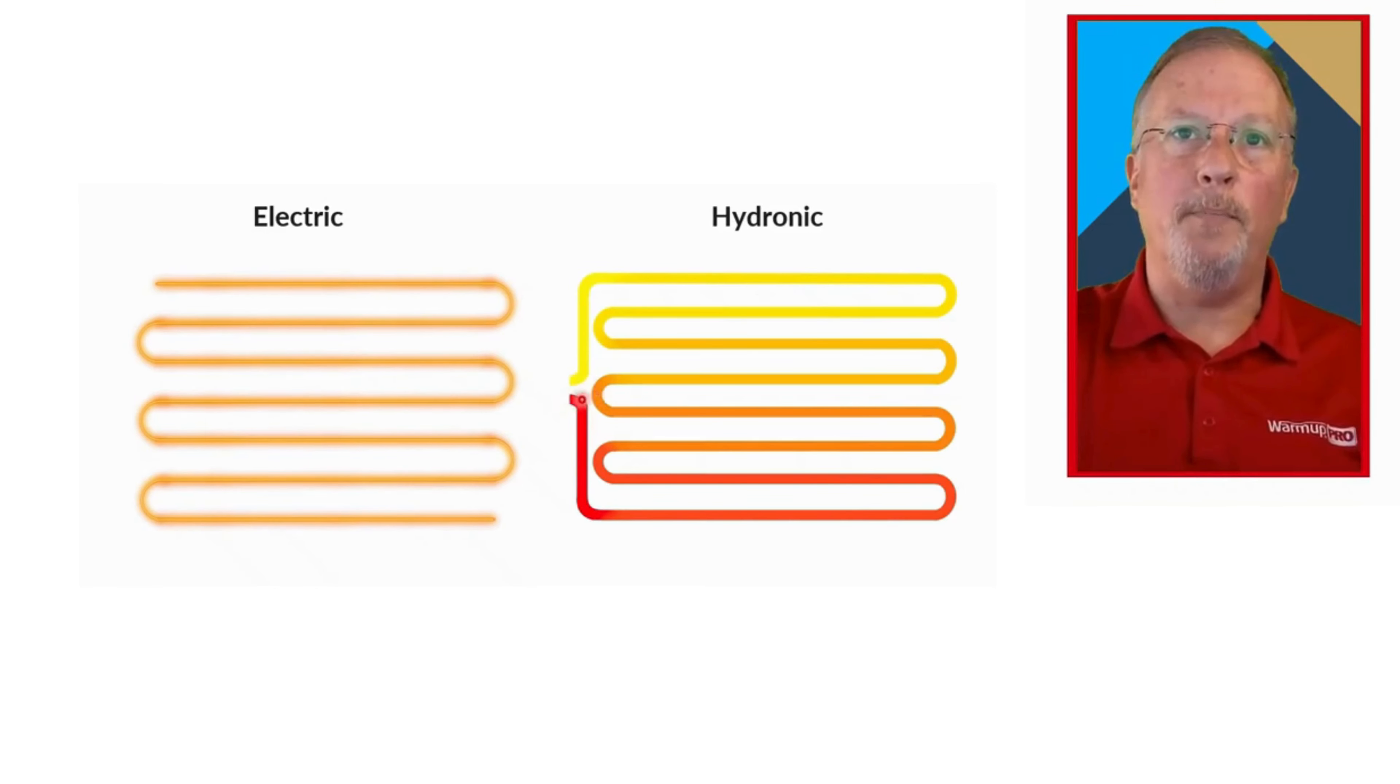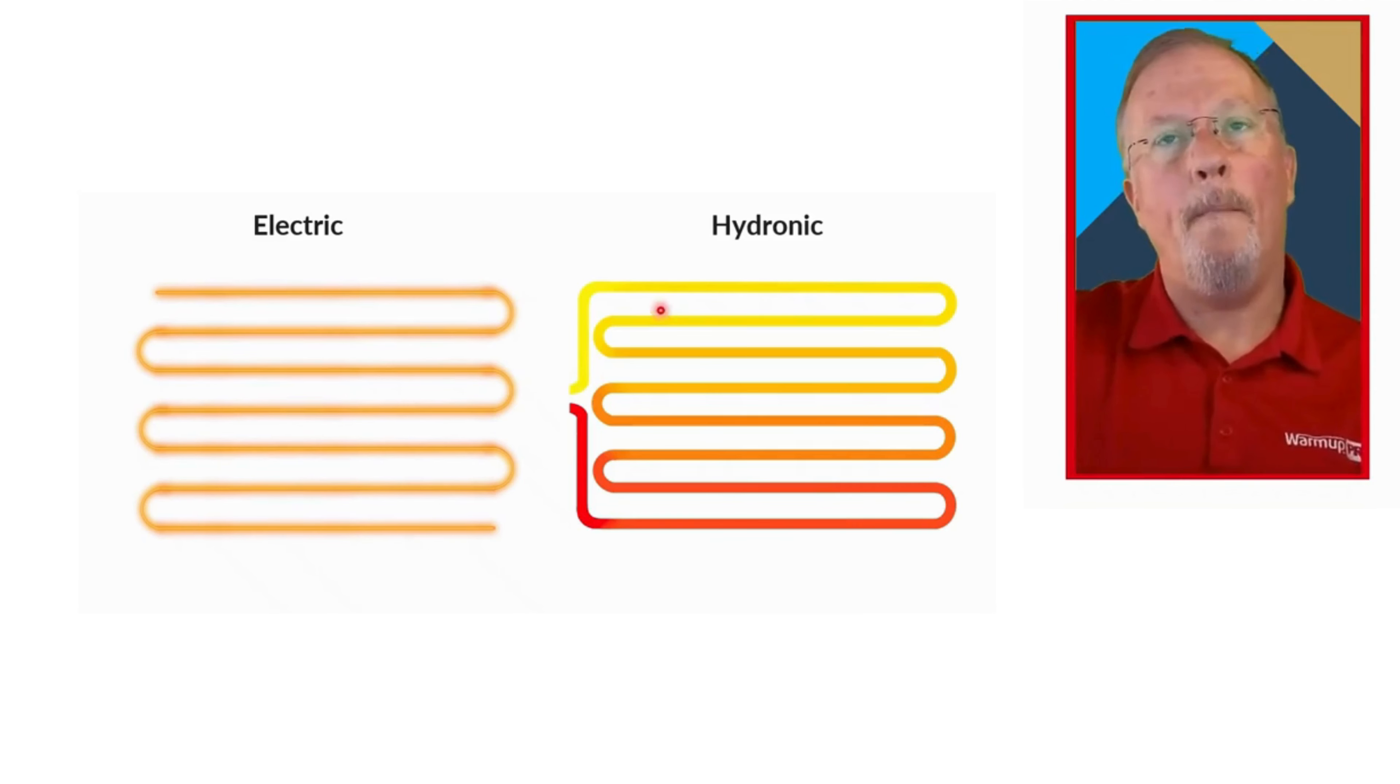The temperature difference between where it comes in and where it goes out could be 20 degrees or thereabouts. Although still much better than a forced air system, because we're heating the entire floor, the difference between the electric and the hydronic system mainly is because the electric side heats the floor perfectly on every inch of the cable, because it has the exact same amount of output.